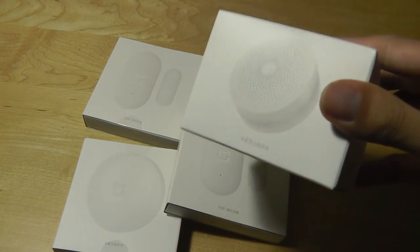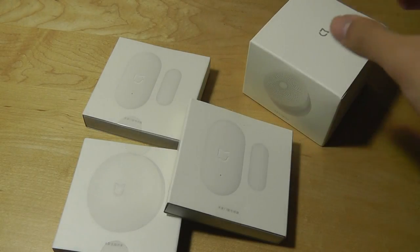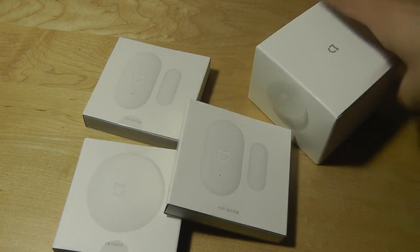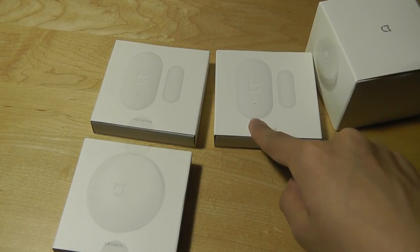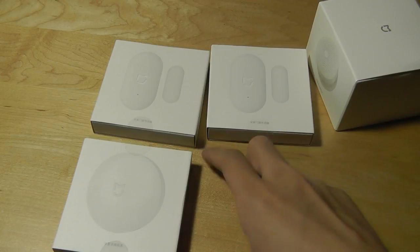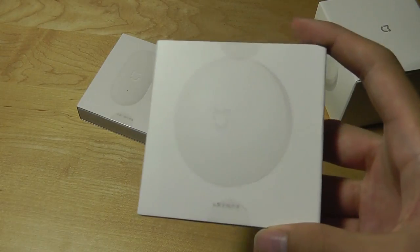How these little parts communicate with the base station is using 2.4 GHz wireless. The base station also features WiFi. There's two of these for a door or for a window. You can also purchase these separately if you don't want to go for this bundle option.